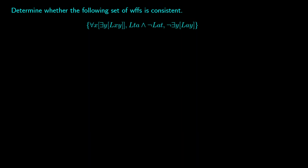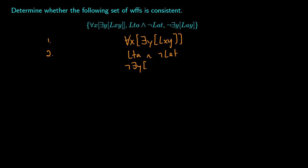One more example — this one has two quantifiers. Line 1 is 'for all x, exists y, Lxy'. Line 2 is 'Lta and not Lat'. Line 3 is 'not exists y, Lay'. These are all assumptions.